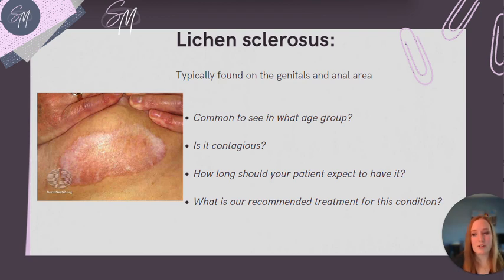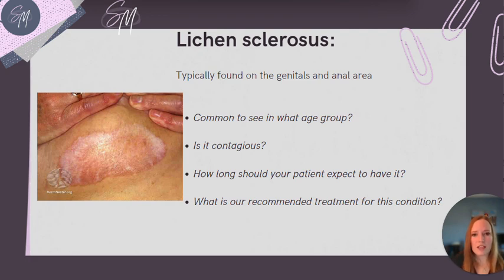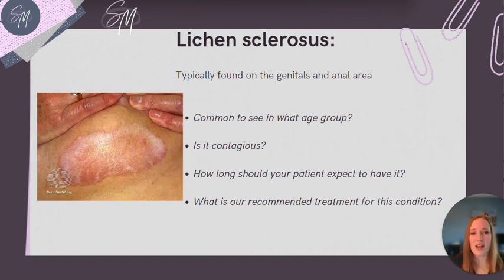Lichen sclerosis appears a bit differently than lichen planus. Lichen planus is only white and lacy in appearance if it occurs on the oral mucosal membranes. However, lichen sclerosis is almost always white in appearance and is primarily found on the genitalia. It is commonly seen in postmenopausal women and typically affects the vulva in particular. This is not contagious like an STI — like lichen planus, it is the result of an overactive immune system. It can be incredibly itchy and can lead to painful sex, tearing, or bleeding.